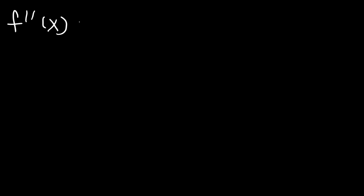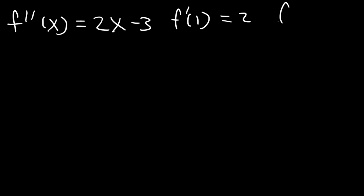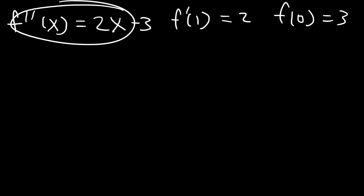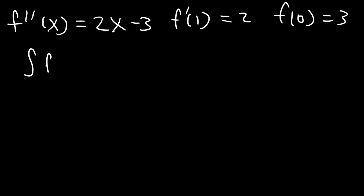Now instead of being given the first derivative, sometimes we may receive the second derivative of the function. Let's say the second derivative is 2x minus 3. This time we need two initial conditions — one for the first derivative and one for the original function. Go ahead and determine f(x) by solving this particular differential equation.